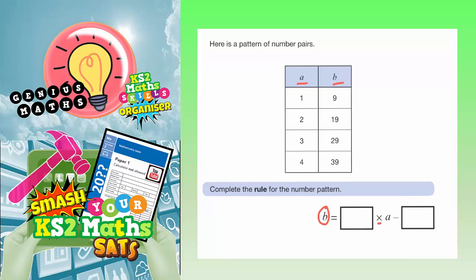You times A by something and then you subtract something from that. This is one of those questions you've just got to look at the numbers and see where it takes you, see if you can spot anything.